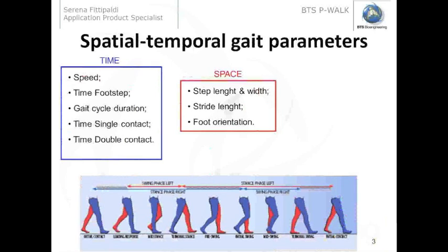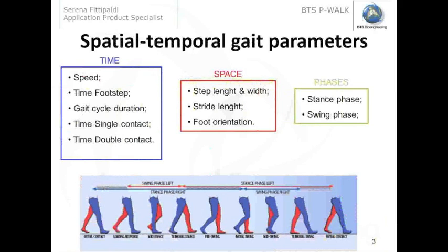We also have parameters related to space evaluation, which are, for example, the step length, the step width, the stride length, and also the foot orientation — which is the inclination of the foot when it contacts the floor. Knowing the spatial and temporal parameters during walking, we can evaluate the stance phase and the swing phase, both in terms of time and in terms of percentage of the overall gait cycle duration.